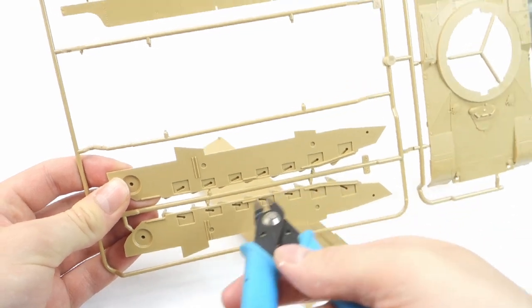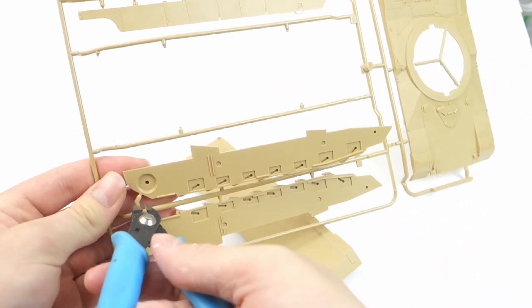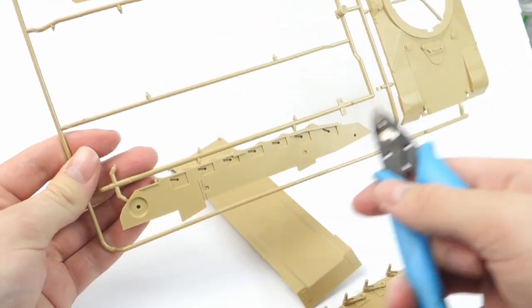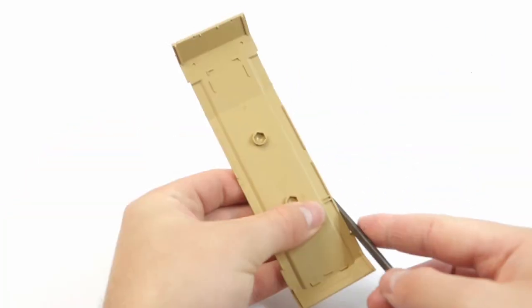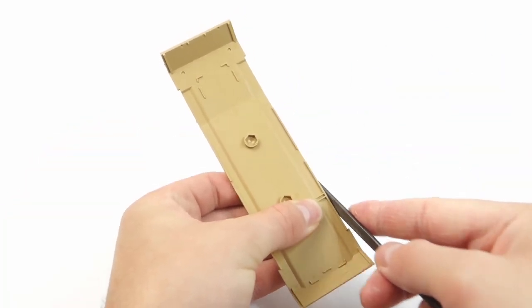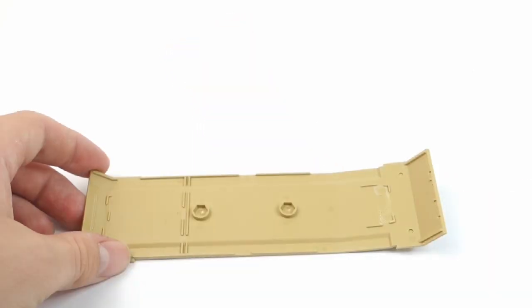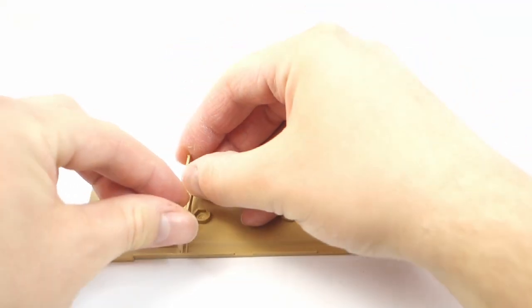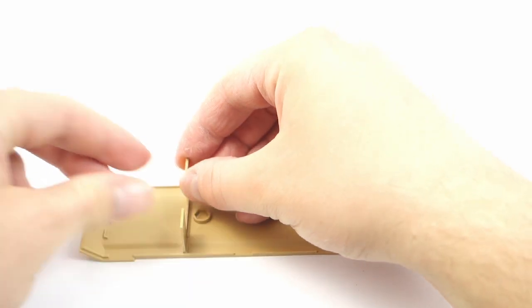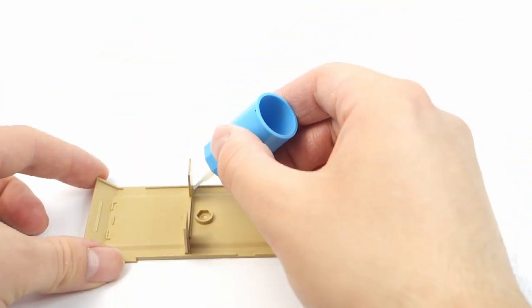I start working on the model as always by removing all the main parts from the sprues. In case of this model it's a quite quick task. The sprue joints are thin and placed in places where the clean-up is not hard to do. I really like the idea of this support inside of the hull. It makes the hull more sturdy and helps a lot while attaching the side plates.